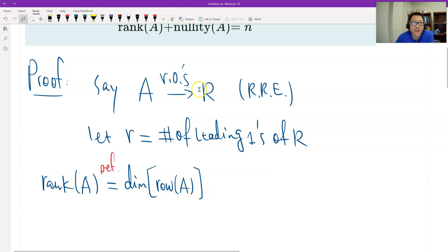Because the row operation does not change the row space, therefore, the dimension of the row space of A equals the dimension of the row space of R, reduced row echelon, which is the number of the leading ones, R. We have that one result equals.